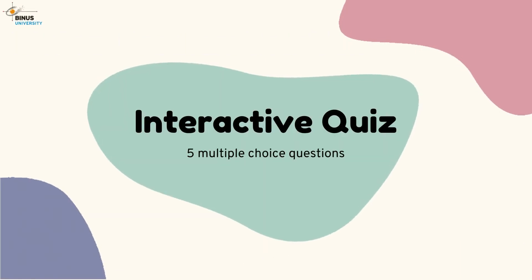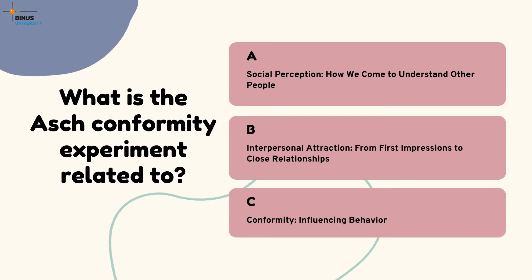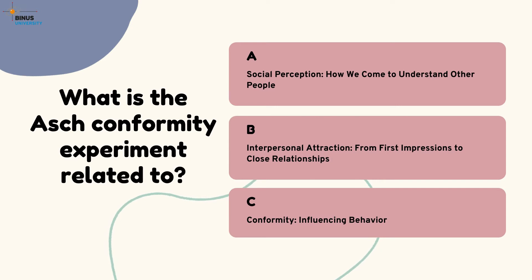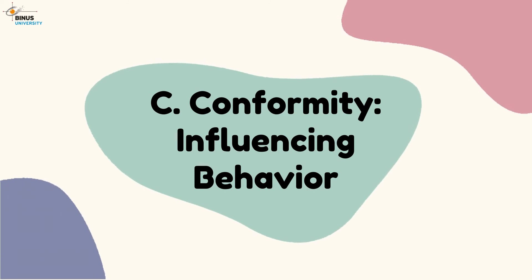We will now enter the interactive quiz session, which consists of five multiple-choice questions. The first question: what is the Asch Conformity Experiment related to? A. Social perception, how we come to understand other people. B. Interpersonal attraction, from first impressions to close relationships. C. Conformity, influencing behavior. The correct answer is C: Conformity, influencing behavior.